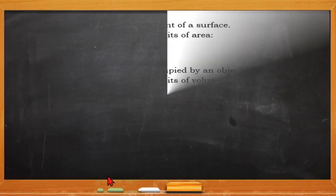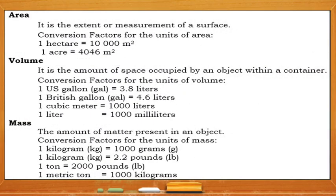Area is the extent or the measurement of a surface. The conversion factors for the units of area are: one hectare equals 10,000 square meters and one acre equals 4,046 square meters.